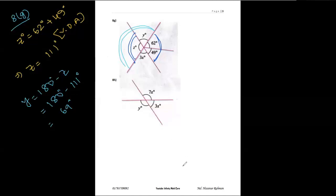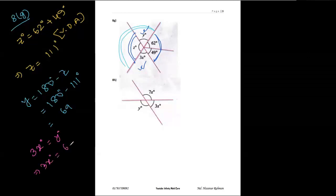Now we find the value of X. The angle 3x and Y are vertically opposite angles, so 3x equals Y, which is 69 degrees. Therefore X equals 69 degrees divided by 3, and the final answer is 23 degrees.